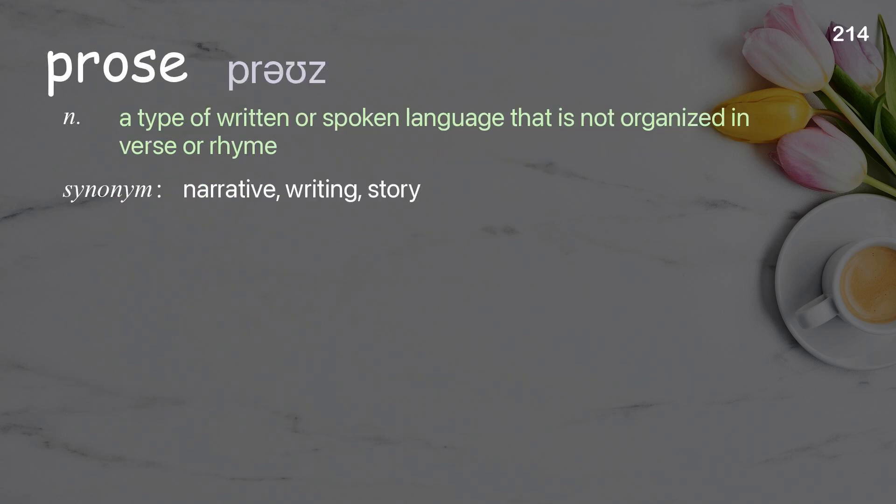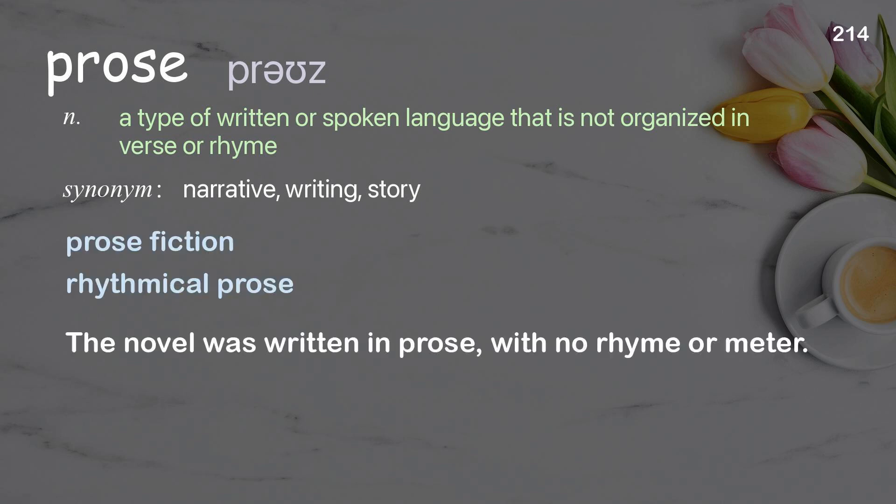Prose: a type of written or spoken language that is not organized in verse or rhyme. Examples: prose fiction, rhythmical prose. The novel was written in prose with no rhyme or meter.